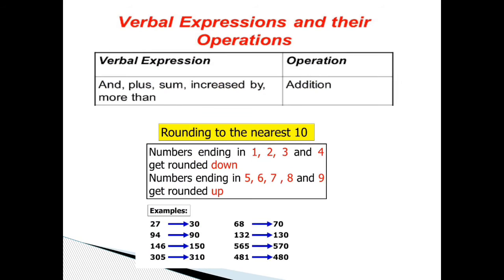Verbal expressions: and, plus, sum, increased by, more than - the operation is addition. Rounding to the nearest tens: Numbers ending in 1, 2, 3 and 4 get rounded down. Numbers ending in 5, 6, 7, 8 and 9 get rounded up.